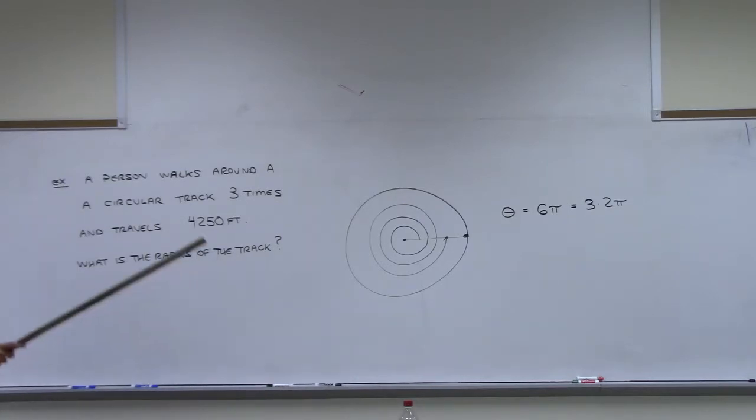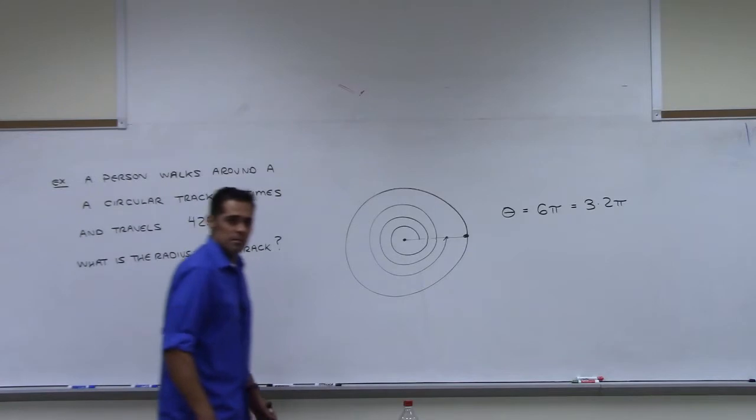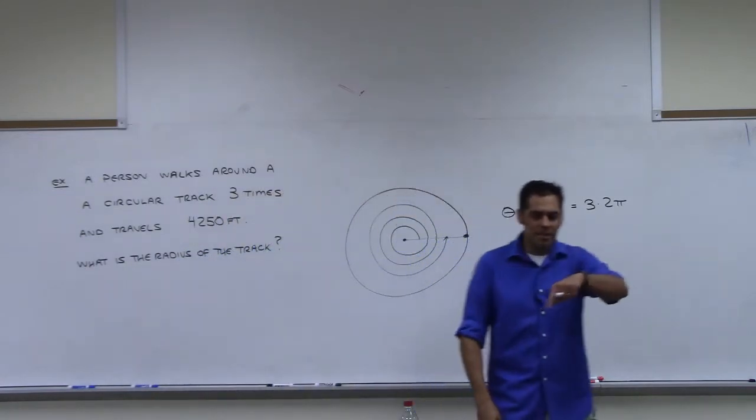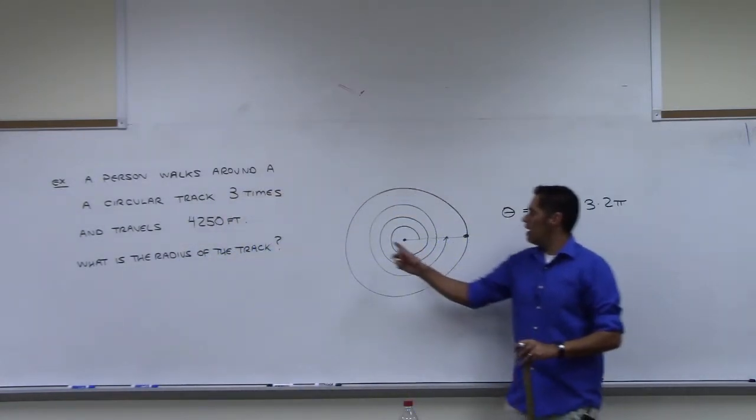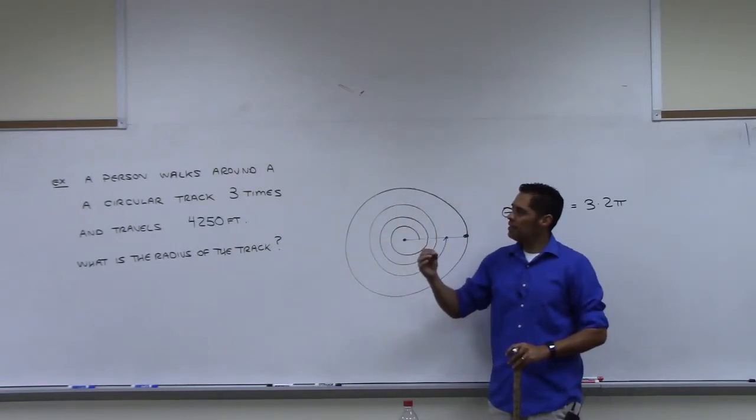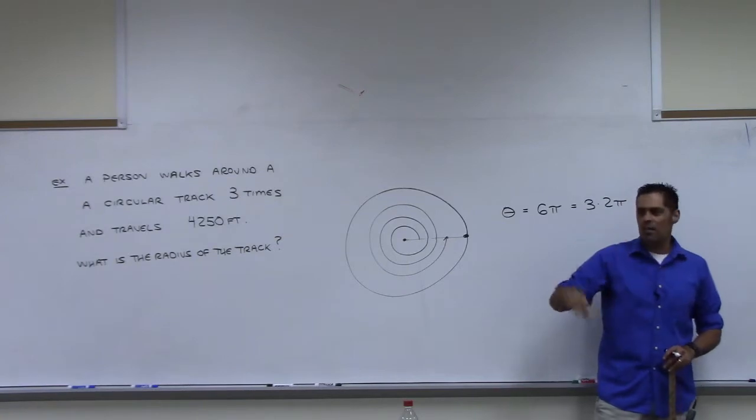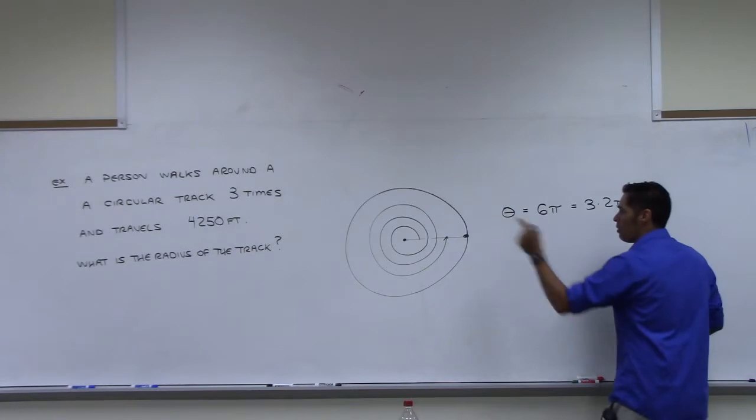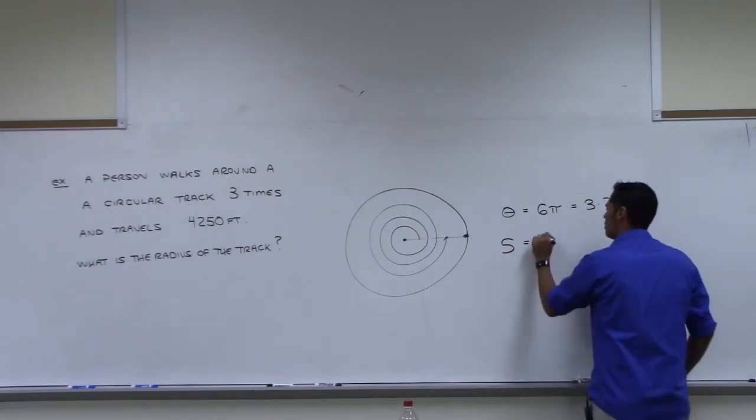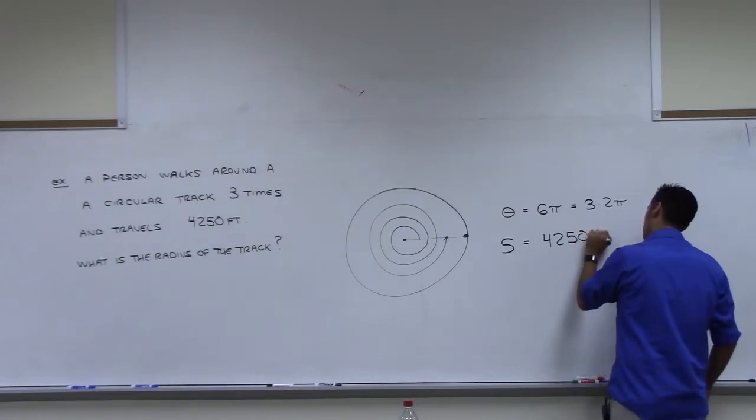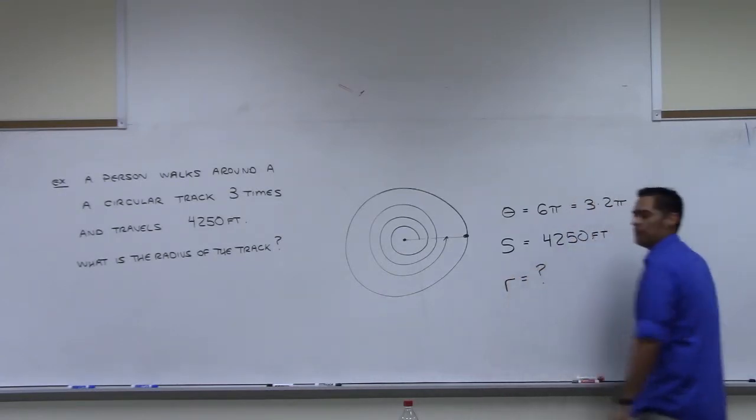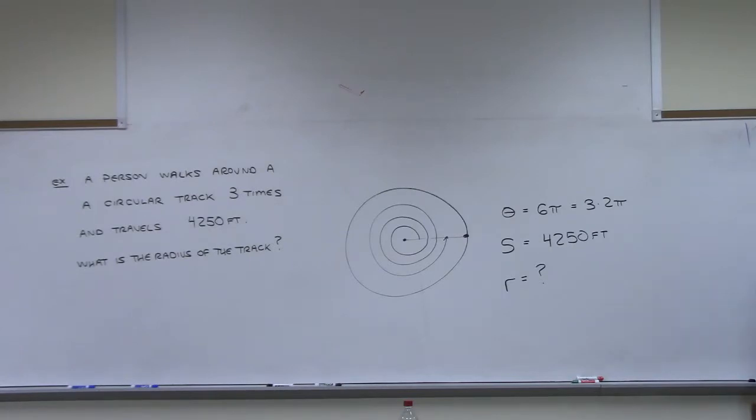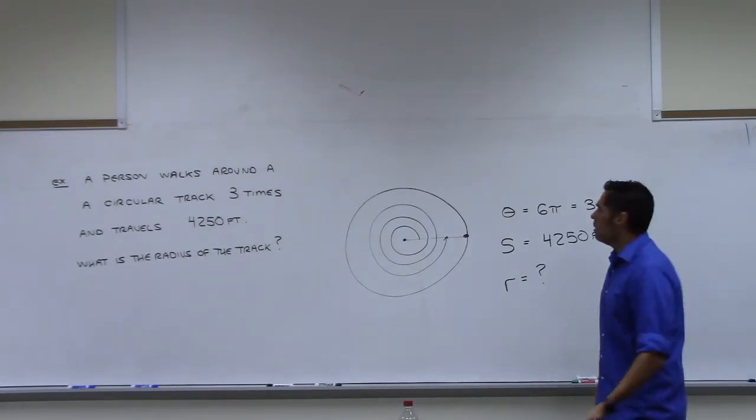What else are you given? They travel 4,250 feet. What is that? Is that the radius? No. That's the distance they went around. They overlapped themselves, but the great thing about this formula is that this formula does not care if you go right on top of yourself again. It's taking a measurement of how far you go. So we're also given in the problem S. S is 4,250 feet. We want R, that's what we want.